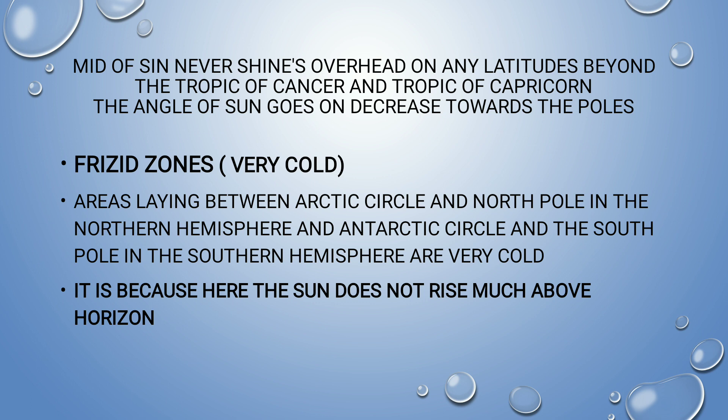The torrid zone receives maximum heat. The frigid zone receives very little heat, so it is very cold. Frigid zones are very cold regions; torrid zones are very hot. Heat zones are called torrid zones; cool zones are called frigid zones. Please keep this in mind.